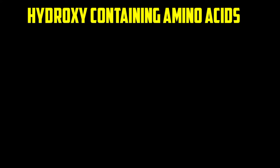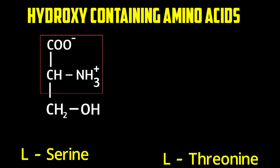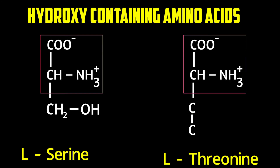The next family is hydroxy-containing amino acids. There is a pattern: the first member gets one carbon, the second member gets two carbons. The first member is serine — draw the general amino formula, add one carbon, bond it to OH. That carbon has two bonds used, so you add H2, giving CH2OH. The next member is threonine — draw the general amino formula, add two carbons. The OH prefers to stay on the first carbon, then balance the remaining carbon with hydrogen.